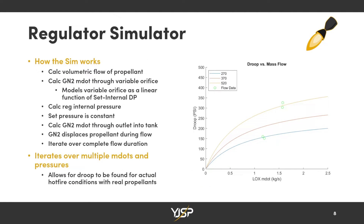Since we're not using our actual propellants during testing, we have to figure out how to convert to the actual propellants used during a fire. To do that, I made a regulator simulator in MATLAB. The simulator first calculates the volumetric flow rate of the propellant out of the tank, and that volume flow rate must be displaced by an equal volume of gas going to the regulator. I then calculate the mass flow through the regulator through all its orifices, assuming the variable orifice is a linear function of the pressure differential between the internal regulator pressure and the set pressure.